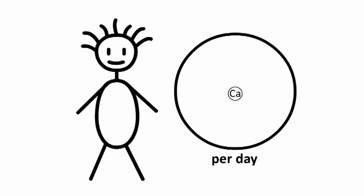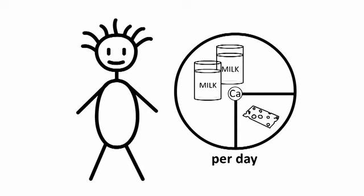The daily calcium need of a toddler is covered by two glasses of milk plus one slice of cheese or one yogurt, 180 grams, or 100 grams of curd.